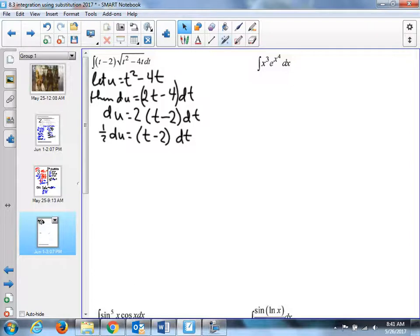Now, the one-half du represents t minus 2 in dt. The letter u represents something under the root sign, so I'm going to have u to the one-half, and that's it, du, half t.